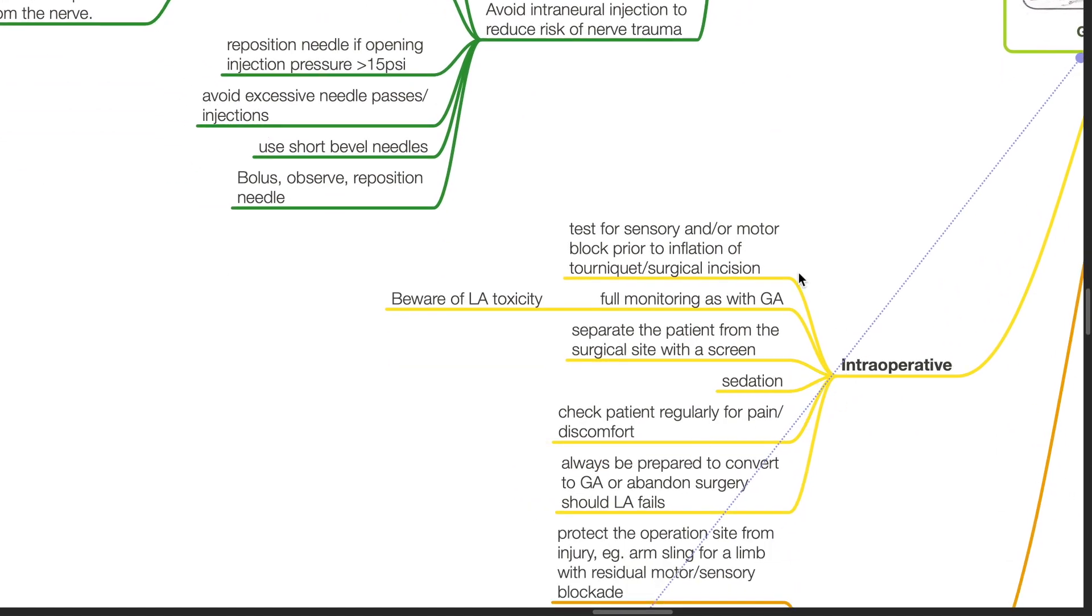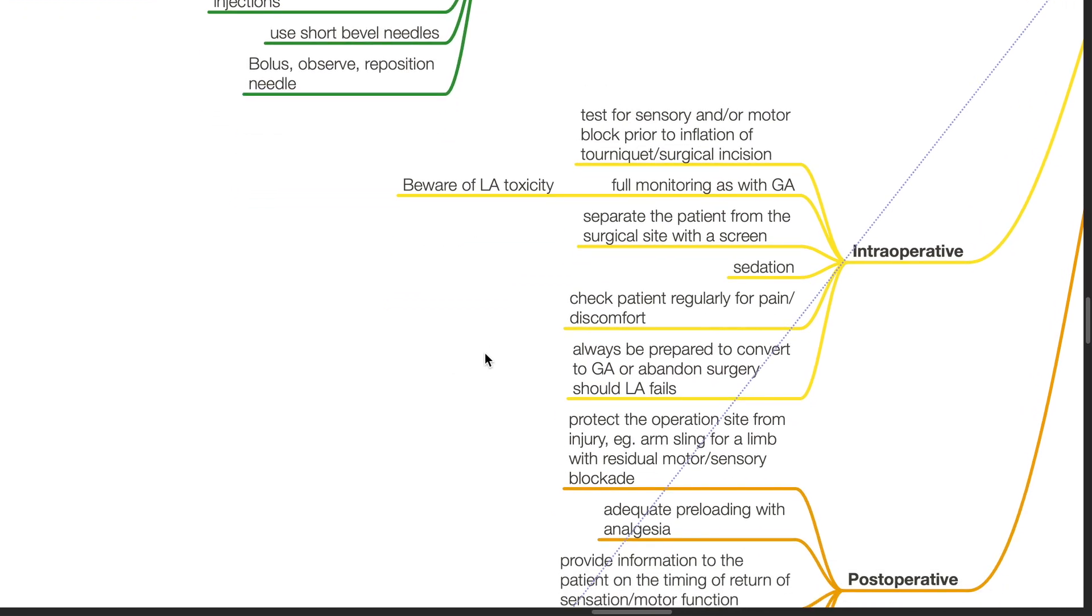Intraoperative measures: test for sensory and/or motor block prior to inflation of tourniquet and surgical incision. Full monitoring as with general anesthesia. Beware of local anesthetic toxicity. Separate the patient from the surgical site with a screen. Use appropriate sedation. Check patient regularly for pain or discomfort. Always be prepared to convert to general anesthesia or abandon surgery should local anesthesia fail.